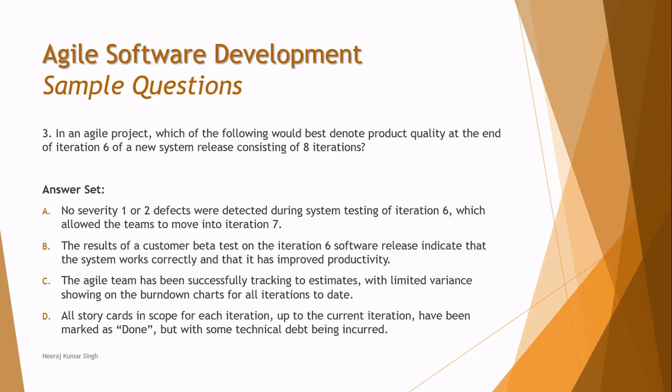Option A: no severity 1 or 2 defects were detected during system testing of iteration 6. In this statement, what we do for each iteration is nothing specific about iteration 6. We follow a 'fix bug first' protocol in agile.